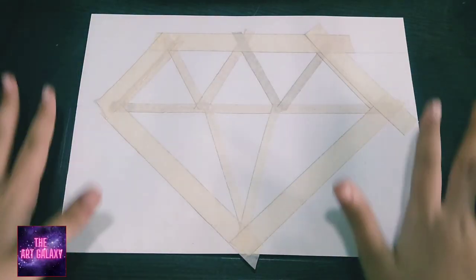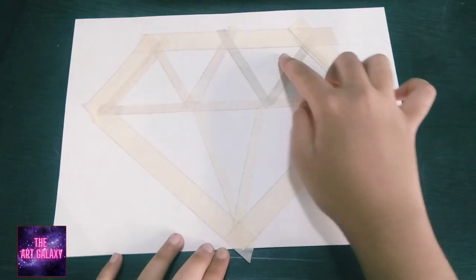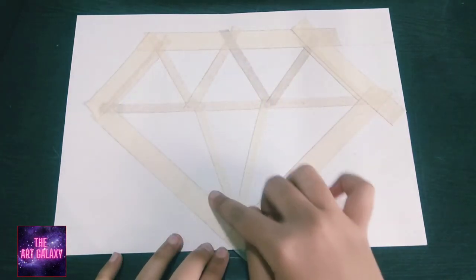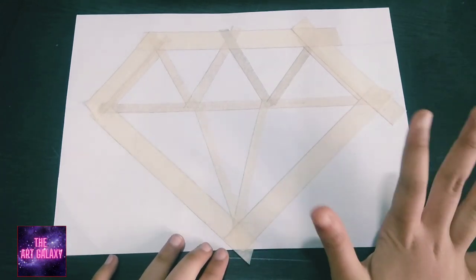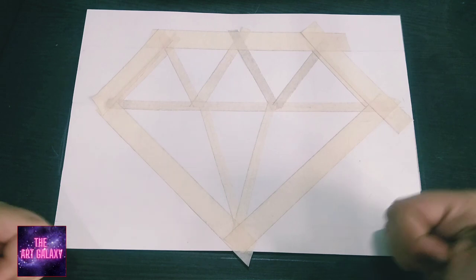Now we have to use masking tape to outline our diamond. We have to use thin masking tape in the central lines and thick masking tape at the borders. Now our diamond is ready for painting.